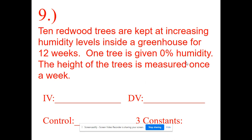The control is always the tricky one to pick out — it's the normal or no-treatment example. Here there could be two valid controls: the 0% humidity group, since that's the no-treatment, or the normal amount of humidity. Either would be appropriate. Constants we'd want to keep the same would include the same type of redwood tree, the same amount of sunlight, the same soil, and anything else we can hold steady, because we only want to change the amount of humidity.